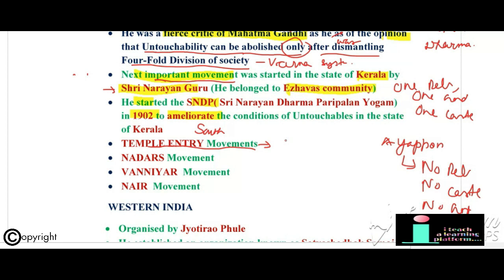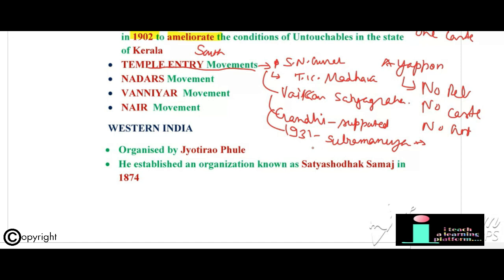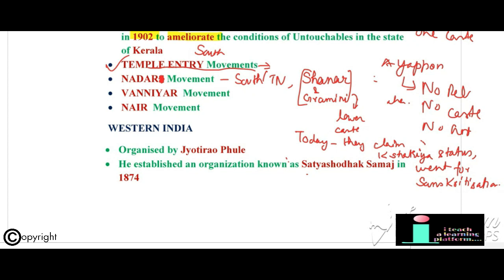The temple entry movement was significant. Reformers like Sri Narayana Guru, Kumaran Asan, and T.K. Madhavan had already done significant work. In 1924, the Vaikom Satyagraha led by K.P. Kesava demanded the opening of Hindu temples and roads to untouchables. The satyagraha was reinforced by jathas from Punjab and Madurai, and Gandhi undertook a tour of Kerala in support. In 1931, when the Civil Disobedience Movement was suspended, a temple entry movement was organized in Kerala inspired by K. Kelappan.